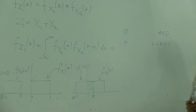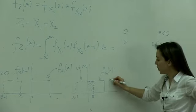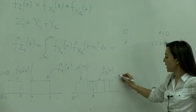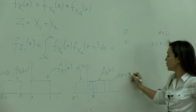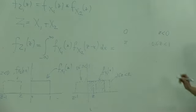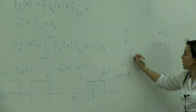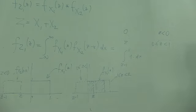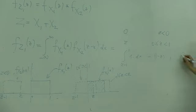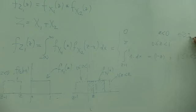The next region is when z gets bigger than 1, so the second square moves out of the first. When z is between 1 and 2, the overlap integral goes from z minus 1 to 1 of 1 dx, which gives 1 minus z. And when z is bigger than 2, we again get 0. So when z is less than 0 or z is bigger than 2, I get 0.